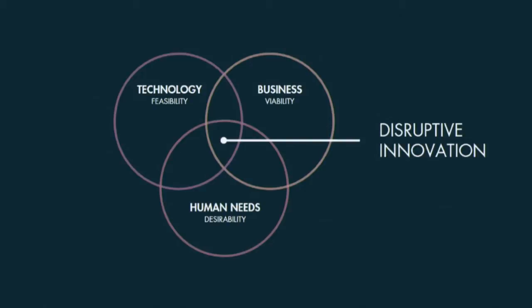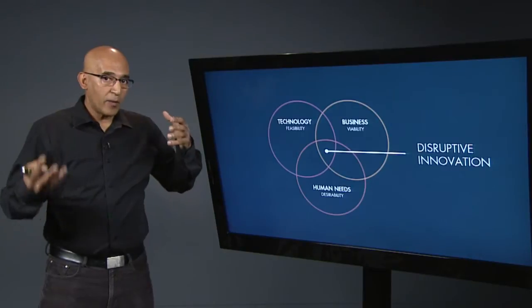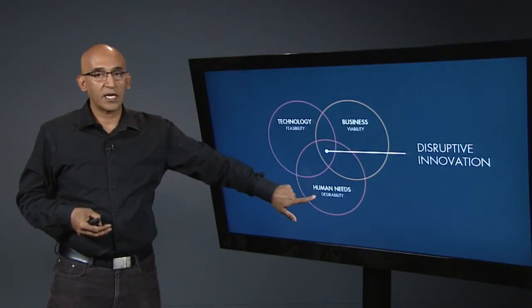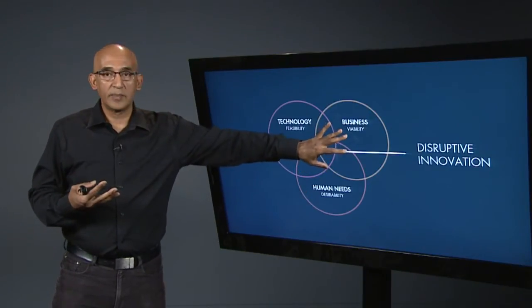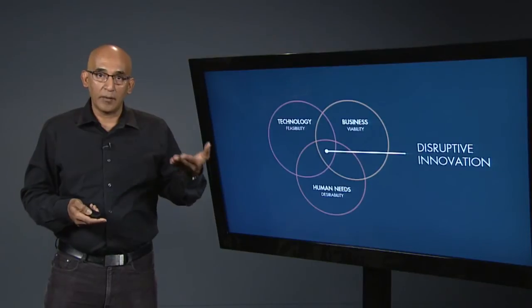As design thinkers, we believe this approach lies at the intersection of technology, human needs, and business — that's where the magic takes place. But there's a difference from typical industry practice, where people come up with a technology, then figure out how to sell it, and then figure out what need it solves — pushing the technology or service. Where we come from, we believe it's very important to first understand the human needs, figure out the business and economic systems that will support it, and then figure out what infrastructure or technological systems need to support that.